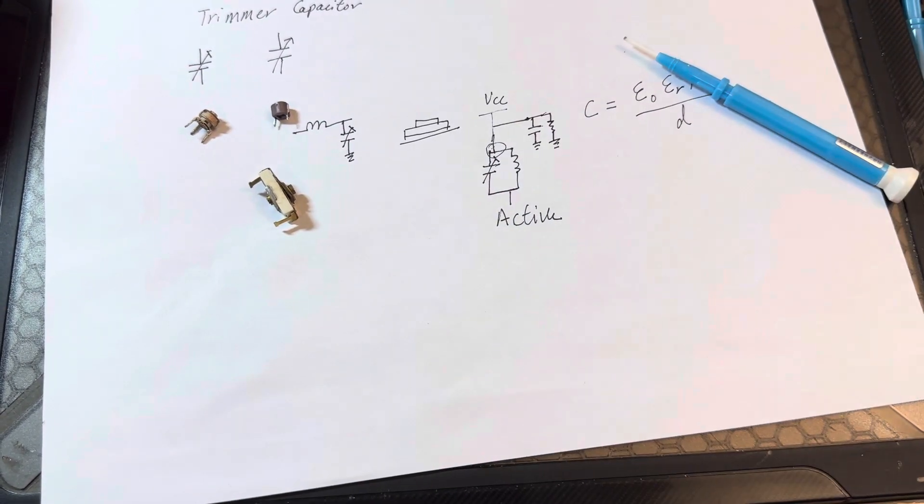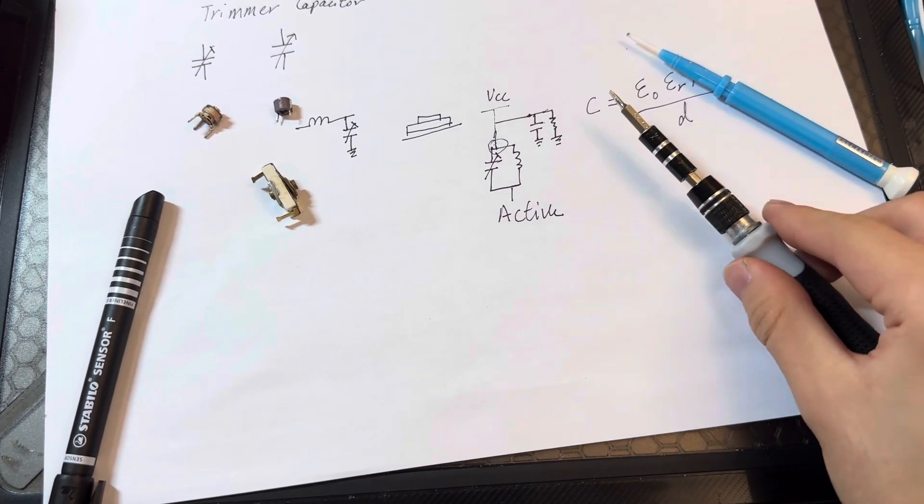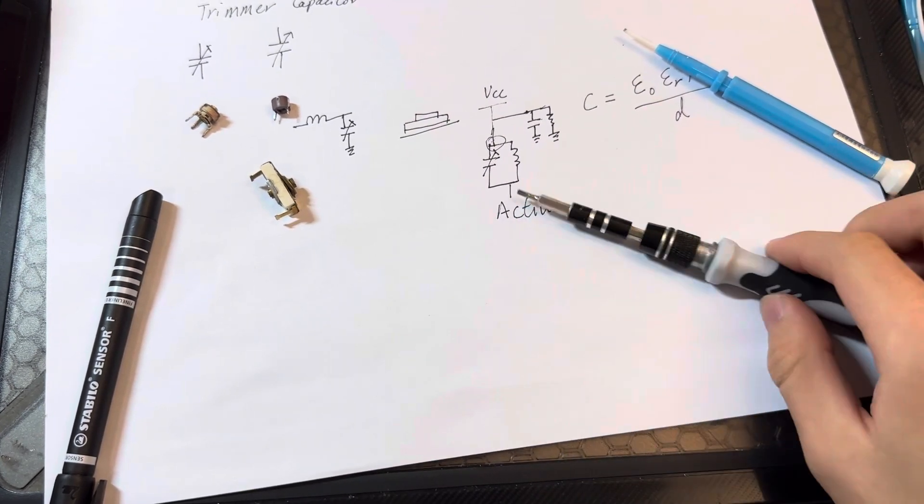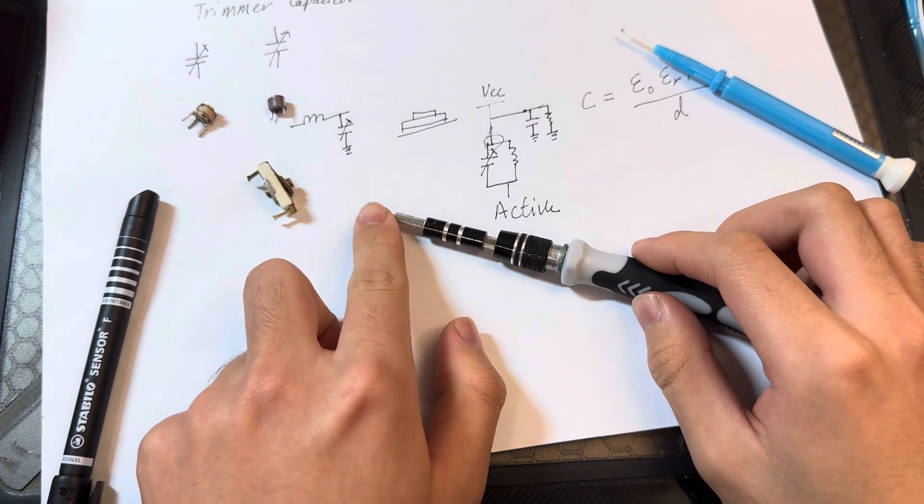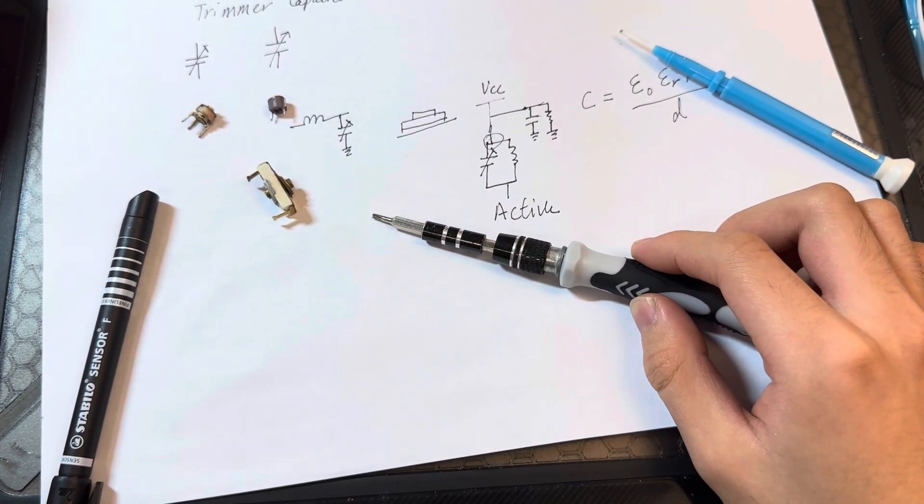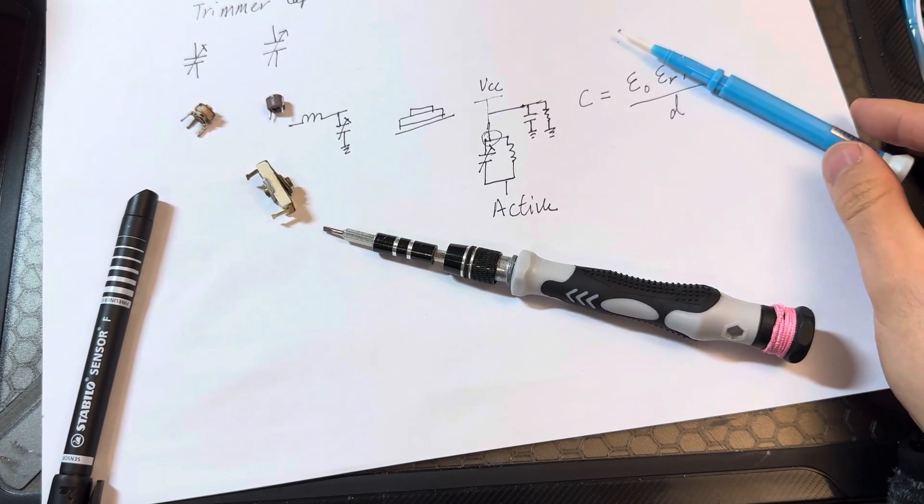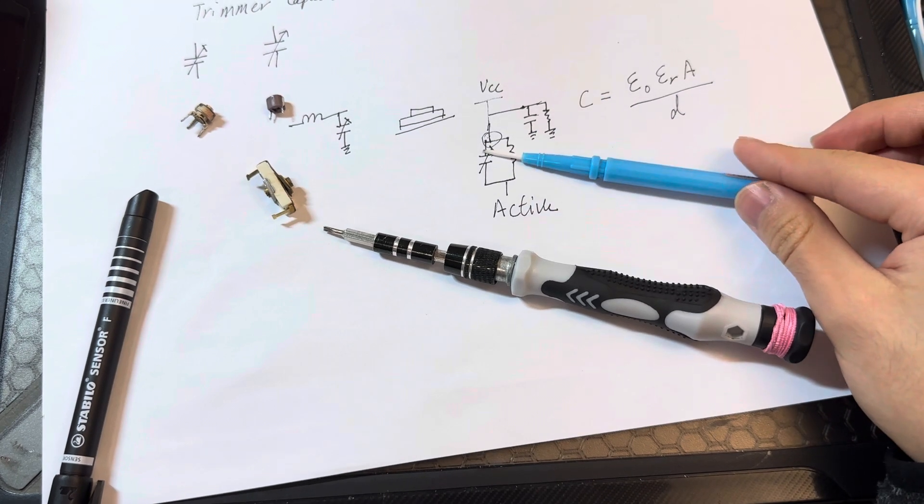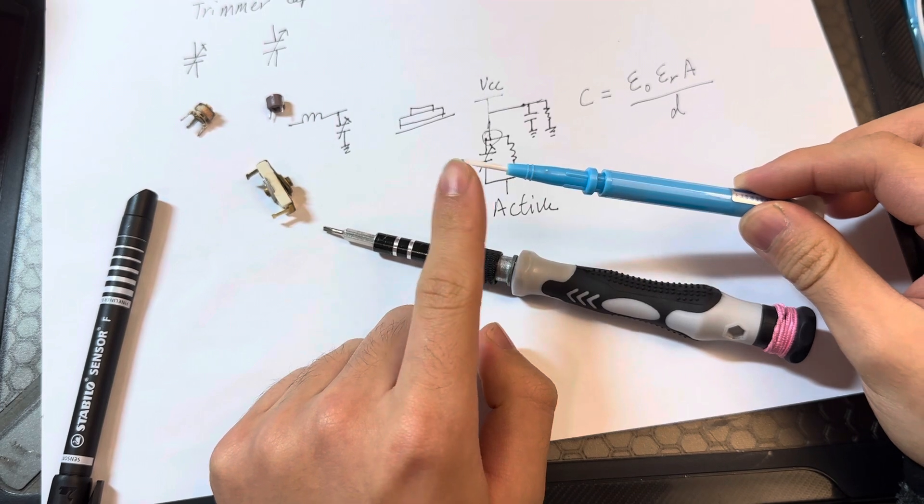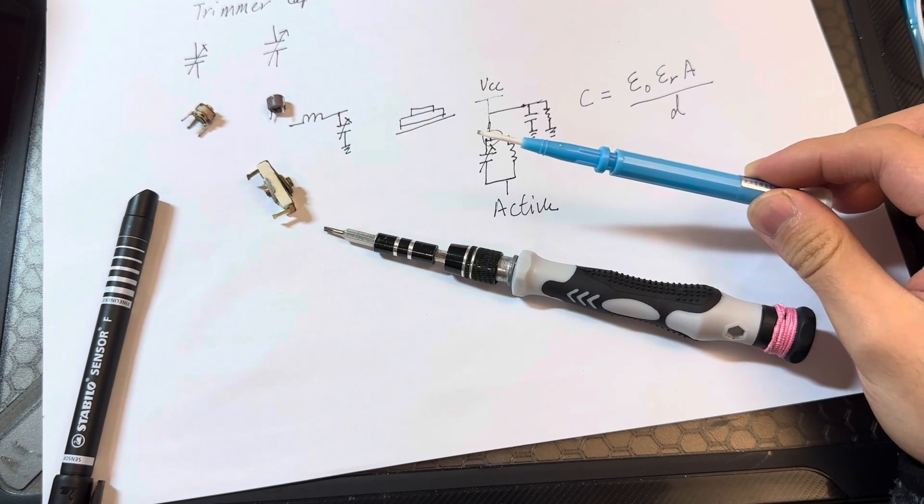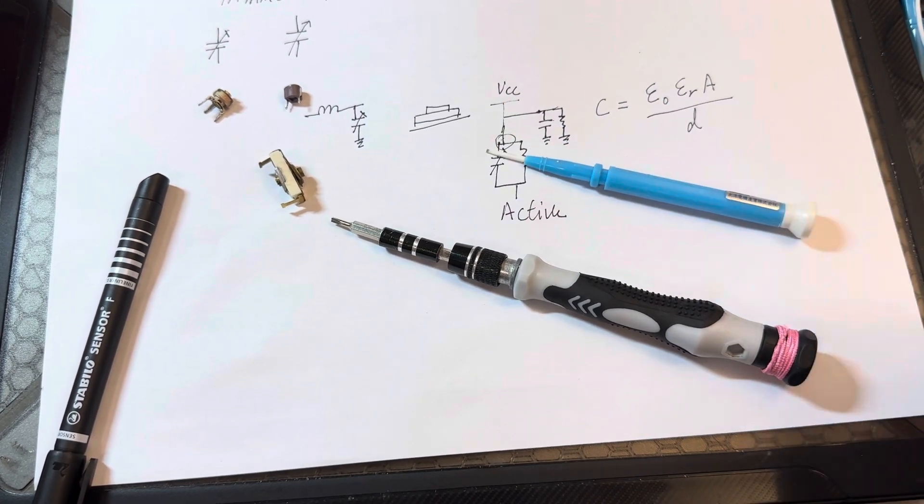When you put anything metal near the capacitor, especially metal screwdrivers, you introduce additional capacitance. If you use metal for tuning a trimmer capacitor, the metal portion will become live and increase the capacitance value, which makes trimming much more difficult than if you use ceramic. A ceramic screwdriver is an insulator, so charge cannot flow on it and the capacitance value generally does not increase. That's it for this video, hope you like it.